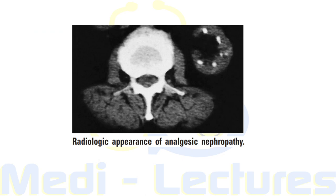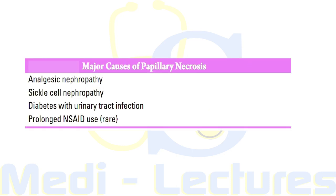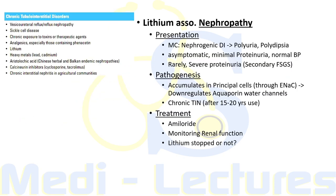An important note: acetaminophen and other NSAIDs used nowadays do not usually cause the characteristic findings of analgesic nephropathy, although increased use can lead to renal toxicity especially in patients with CKD or in volume-depleted states. MCQ: Which of the following is a cause of papillary necrosis? According to Harrison, the major causes include analgesic nephropathy, sickle cell nephropathy, diabetes with UTI, and prolonged NSAID use. The correct answer is all of the above.